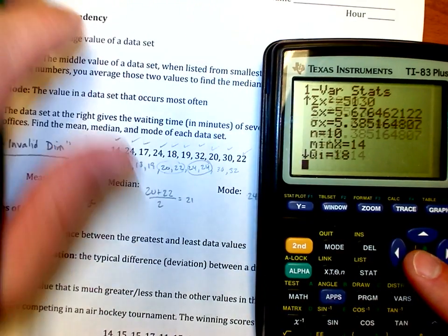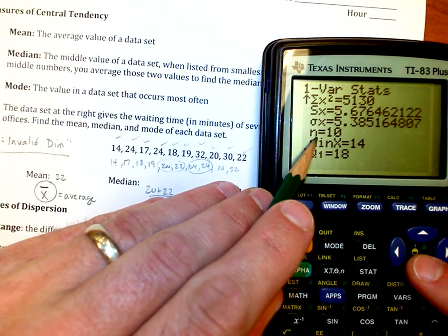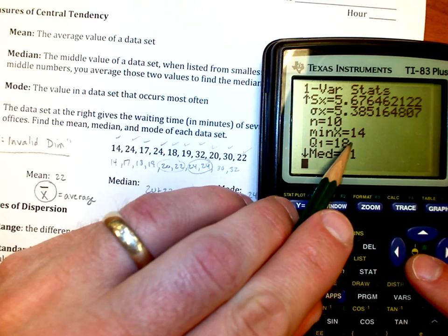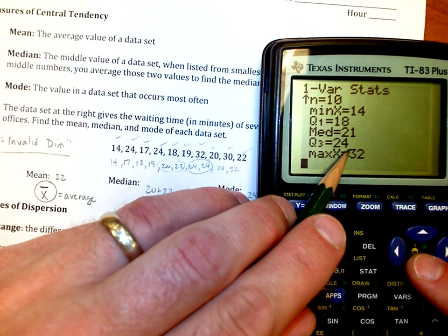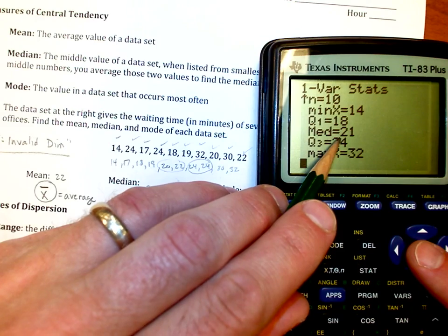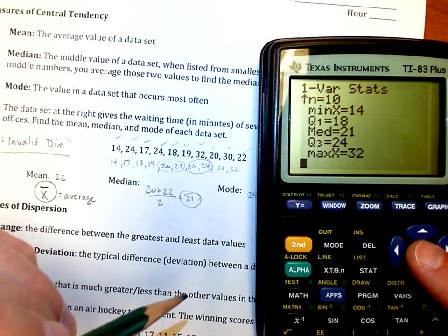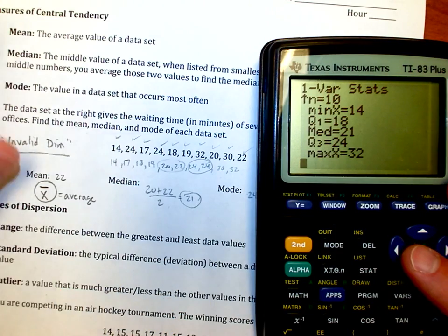If I start scrolling down, it'll tell me how many values I have. There were 10 values. It'll tell me the smallest value, my minimum x value was 14. It'll tell you the median value is 21. And it'll tell me my maximum value is 32. So it gives us all sorts of information.